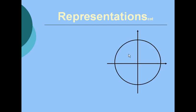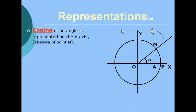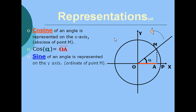To review what has been mentioned: this is the trigonometric circle, counter-clockwise is the positive sense, and this is angle alpha. Cosine of an angle is represented by the x-axis, and sine of an angle is represented by the y-axis.